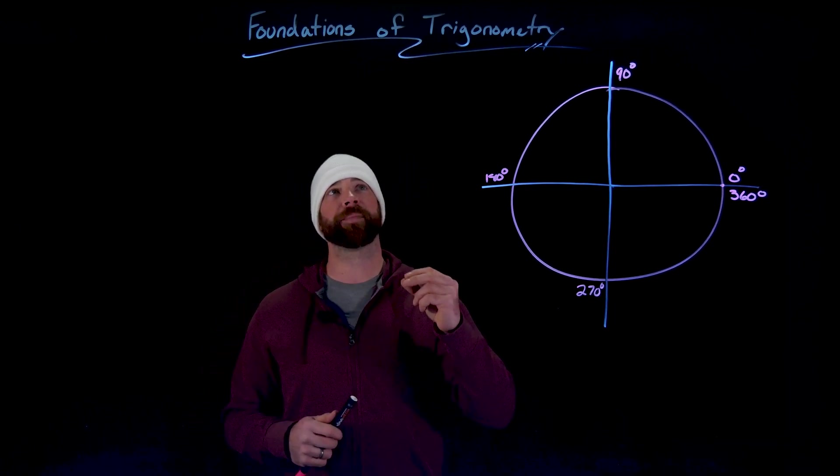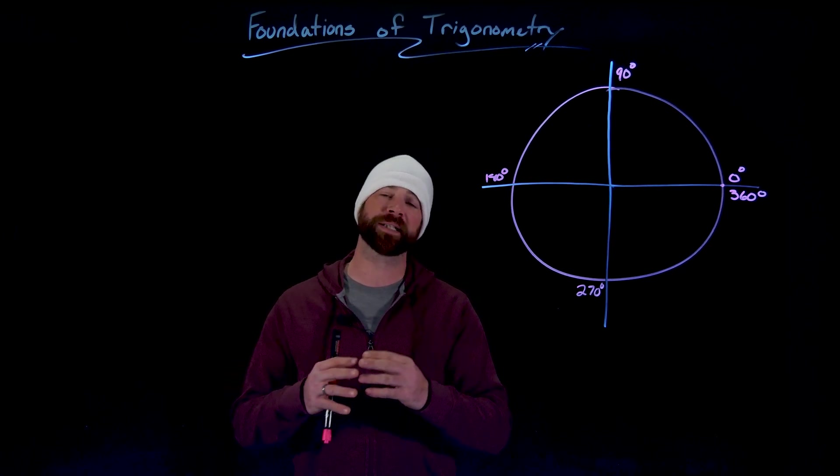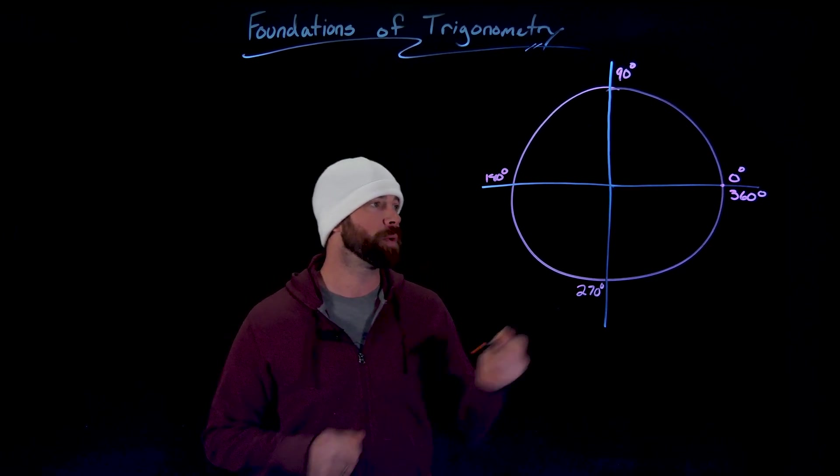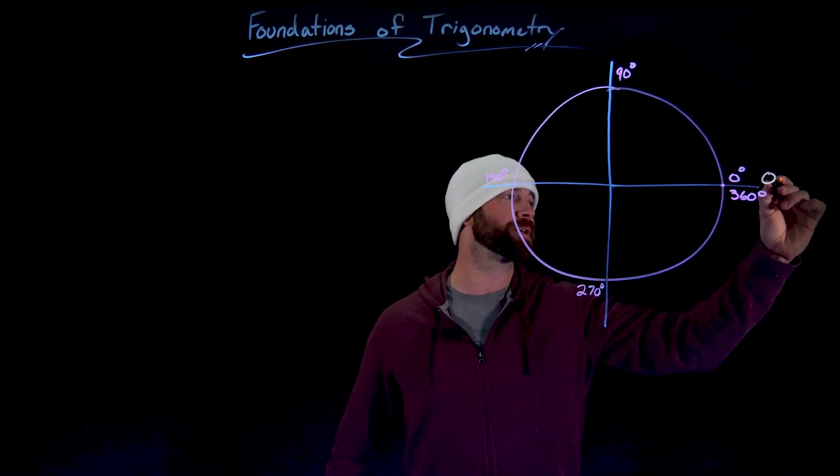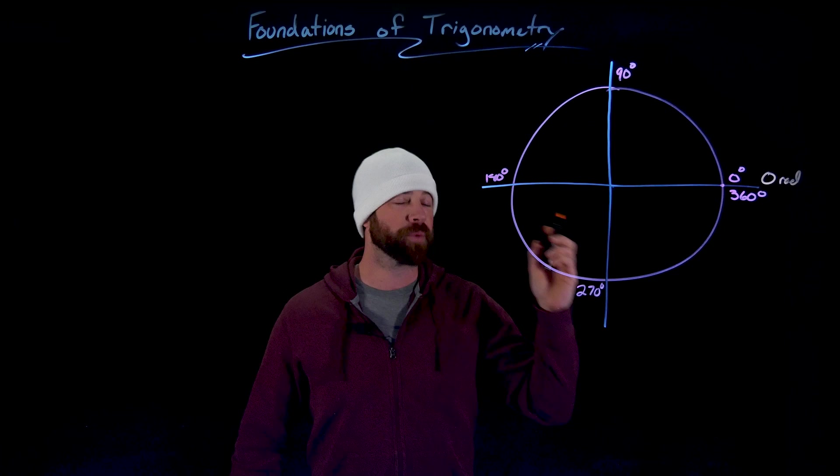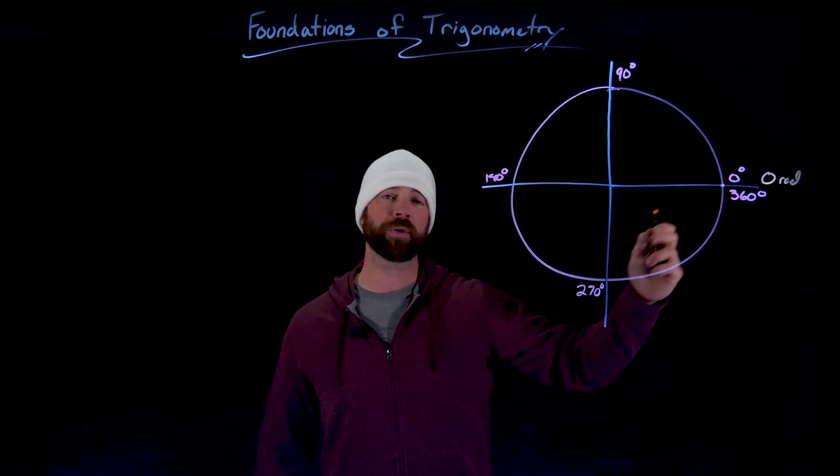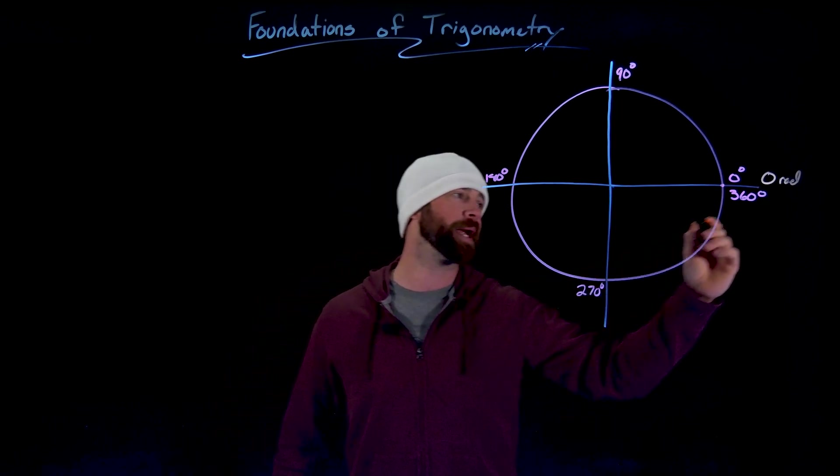Importantly, radians are extremely useful in mathematics, specifically when we get to calculus, because there's simplicity. We have zero radians is the same as zero degrees. It starts here at this point right here. For radians, it's defined as if we go all the way around this circle, we've completed two pi radians.